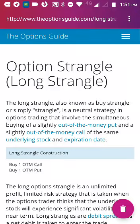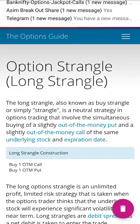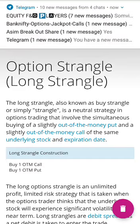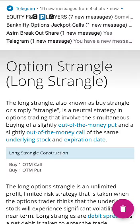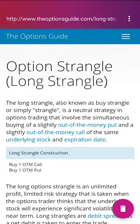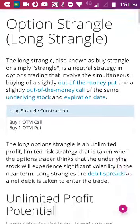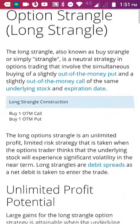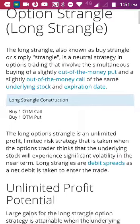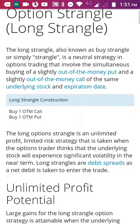Hello everyone, today I would be talking about an option trading strategy which is known as long strangle, also known as buy strangle. Long usually means buy in stock markets, so this strategy is also known as buy strangle or simply strangle. It's a neutral strategy that involves buying a slightly out-of-the-money put as well as an out-of-the-money call of the same stock and expiration date.